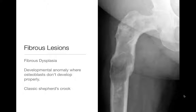Any time you see a lesion in the proximal femur, you should probably at least entertain the possibility of fibrous dysplasia, just because it's a common place for it to occur. Think about fibrous dysplasia for things that look there, because it could look sclerotic there as well.